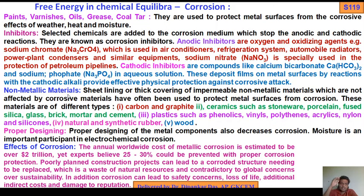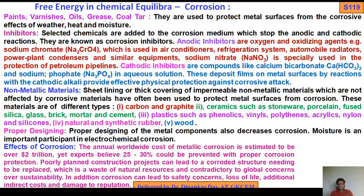Cathodic inhibitors are common compounds like bicarbonates — calcium bicarbonate, sodium phosphate — which in aqueous solution deposit films on the metal surface by reactions with cathodic alkali, providing effective physical protection against corrosive attack. Non-metallic materials: sheet lining or thick covering of impermeable non-metallic materials, which are not affected by corrosive materials, have been used to protect metal surfaces from corrosion. These materials include: carbon and graphite; ceramics such as stoneware, porcelain, fused silica, glass, bricks, mortar, and cement; plastics such as phenolics, vinyl, polyethylene, acrylic, nylon, and silicones.